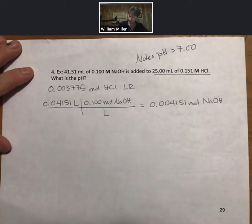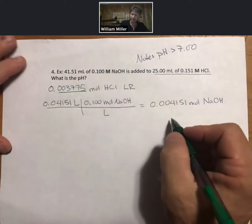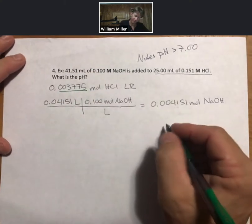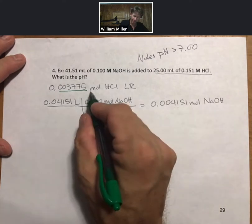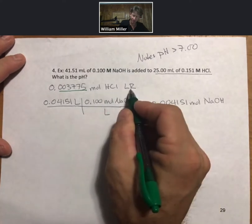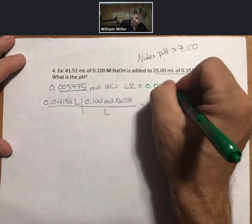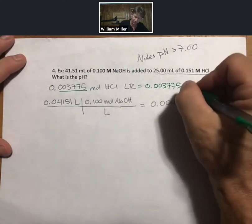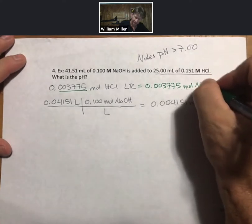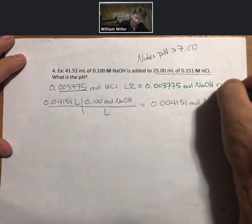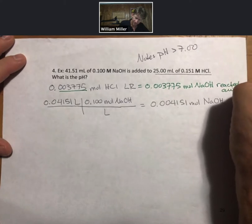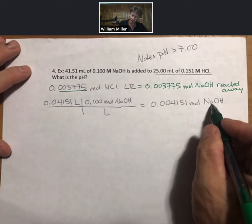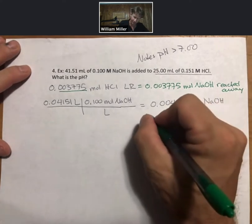Now because there's one-to-one stoichiometry like the similar previous problems, we know that this moles of HCl for our limiting reactant equals the same number of moles of sodium hydroxide that are reacted away.